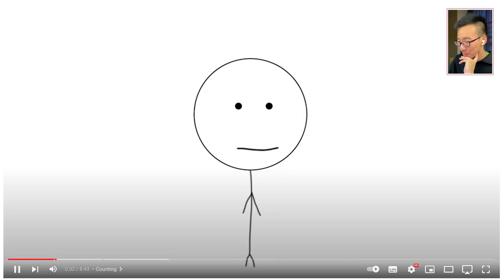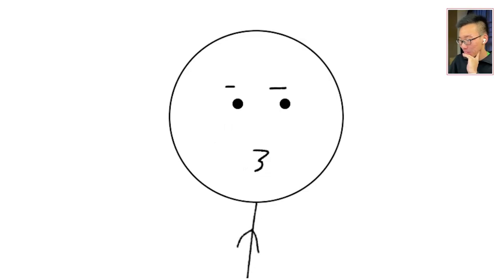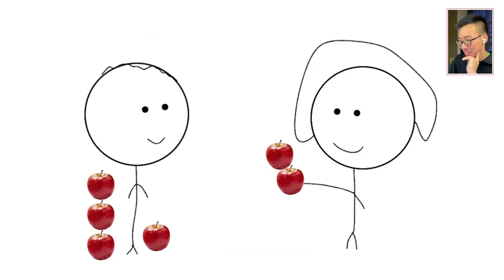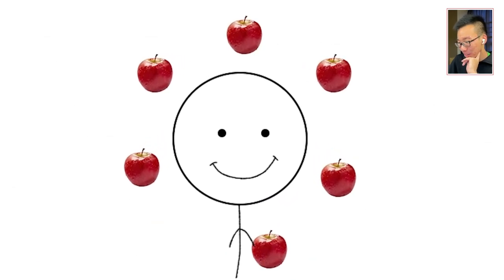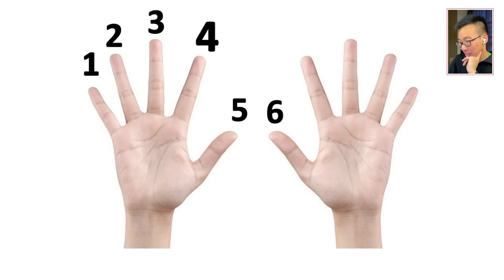Level one, counting. We all did it. Some of us still do. Counting with your fingers. Jimmy has four apples and Eve gave him an extra two. How many apples does Jimmy have? You'd look at your fingers, start with four and raise two extra and then you count. Easy.